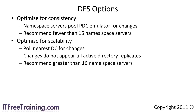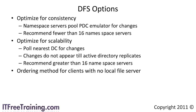With DFS, you can also set the ordering mode used when clients do not have access to a local file server. In the example before, the client accessing the DFS server when possible will be directed to a server in their local site. If no file share is available on the local site, the client may be directed to a server outside its local network. This can be done in a random order. You can also set server selection based on the lowest network cost. When you set up sites, you can set up a cost associated with the link. DFS will follow the links and add up the cost and use the path with the lowest cost.